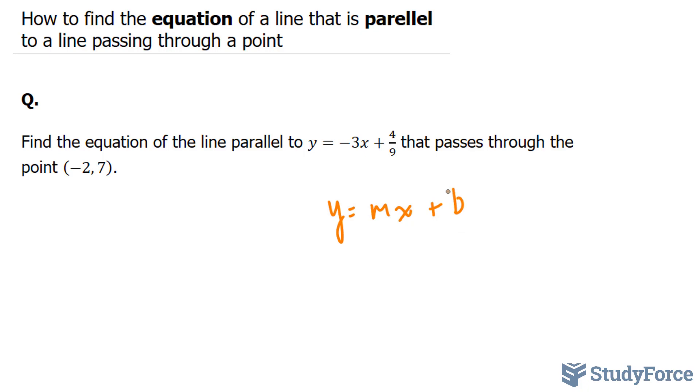This b value right here represents the y-intercept. That is the point where the line crosses the y-axis. The x and the y represent your independent and dependent variables.